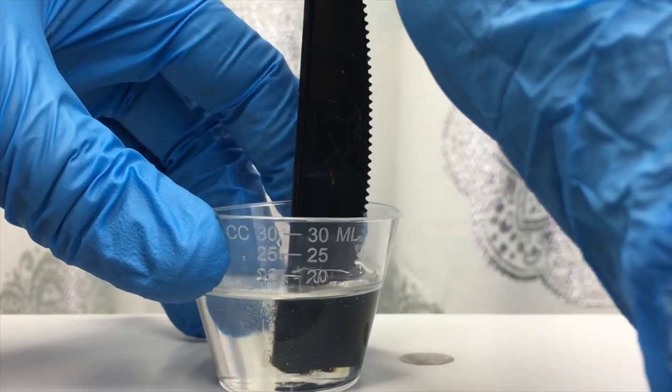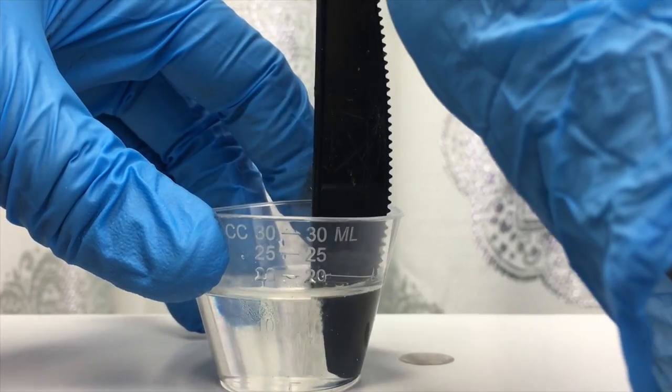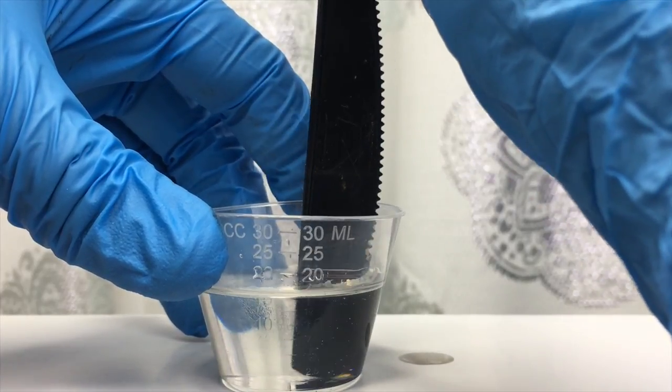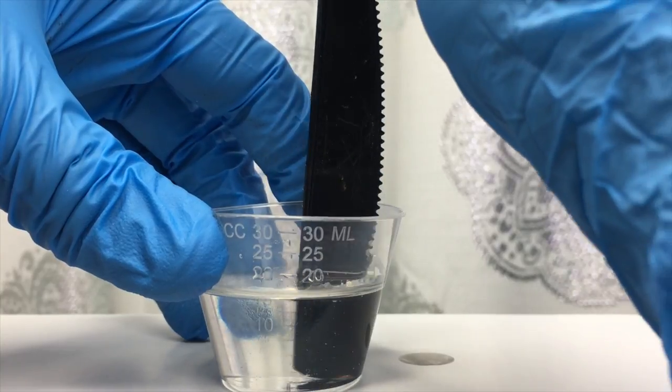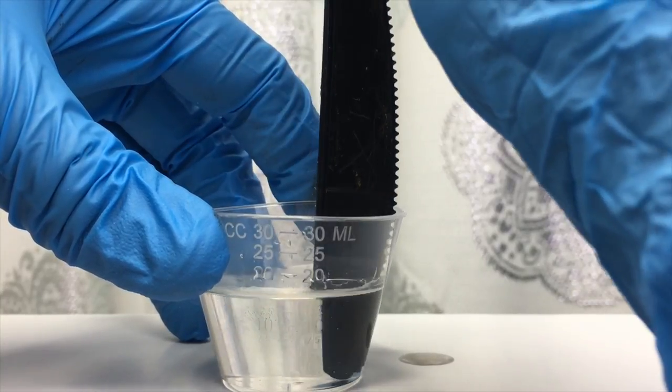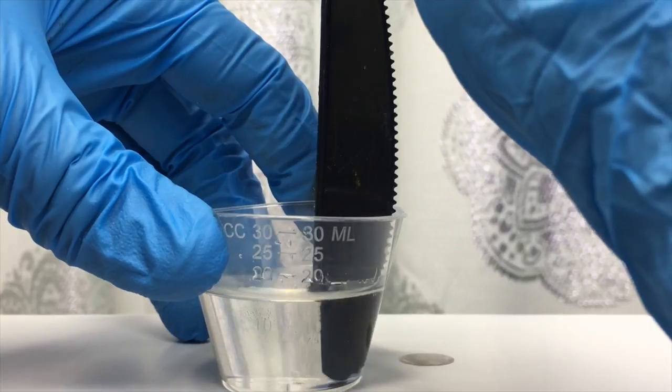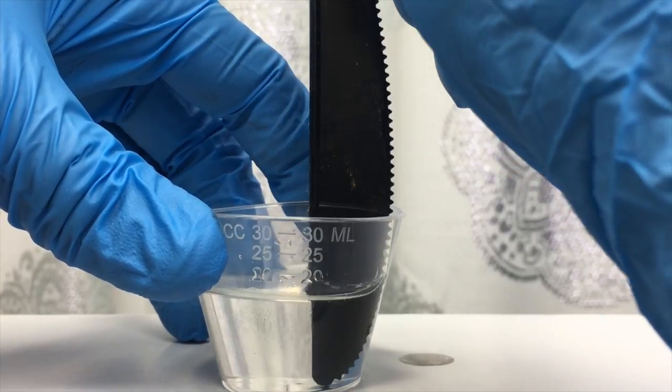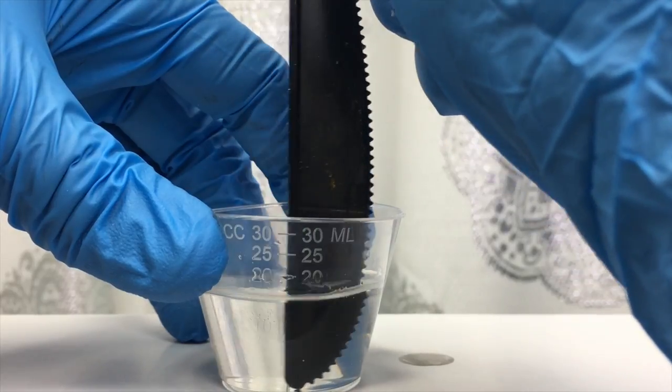For this resin I only need to mix for about three to five minutes and then I won't see any more cloudiness or streaks and you guys can see there's barely any bubbles. There's a few micro bubbles here and there but if I let it sit for about five minutes before pouring them into the mold I will literally see barely any bubbles at all.